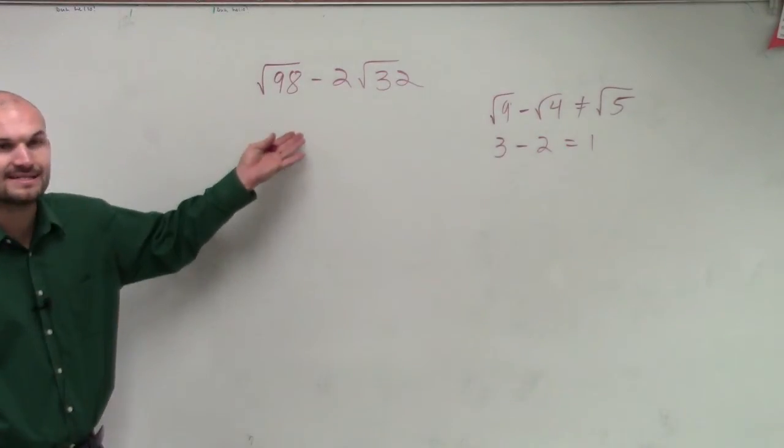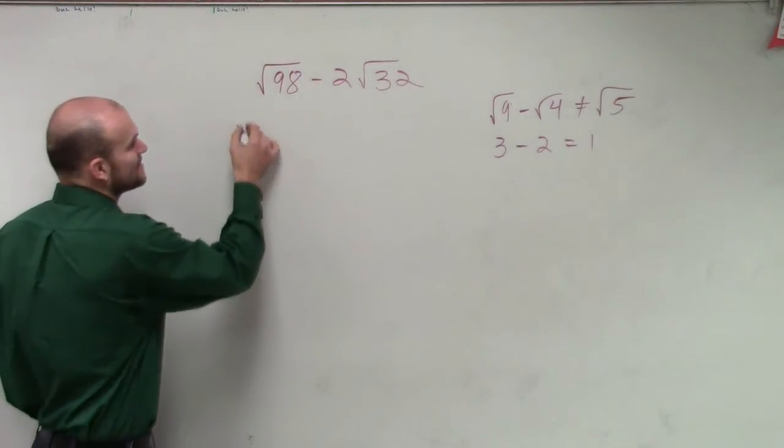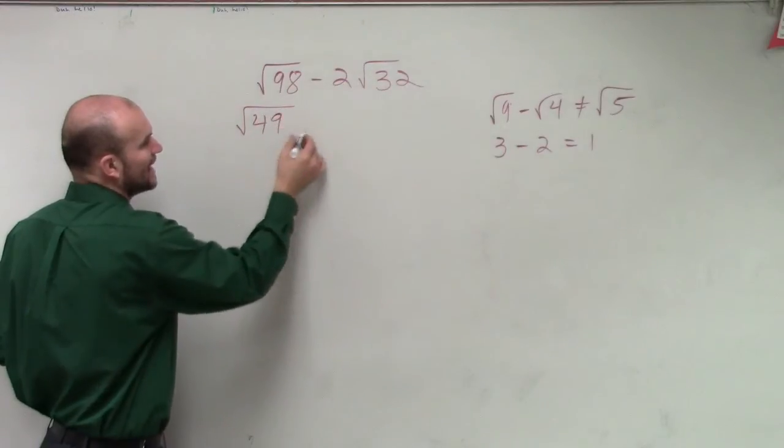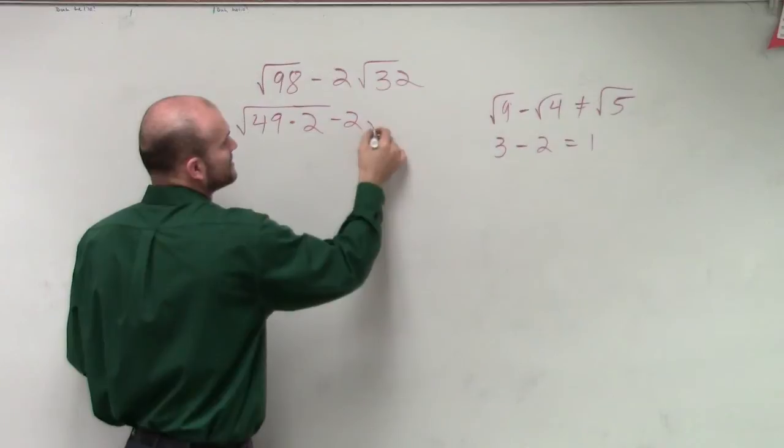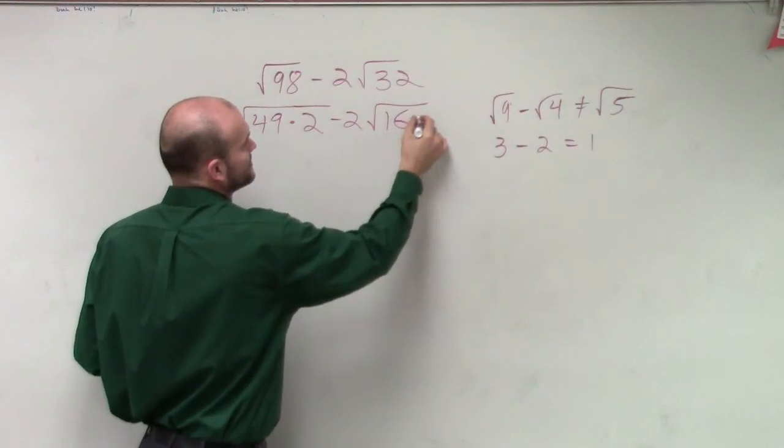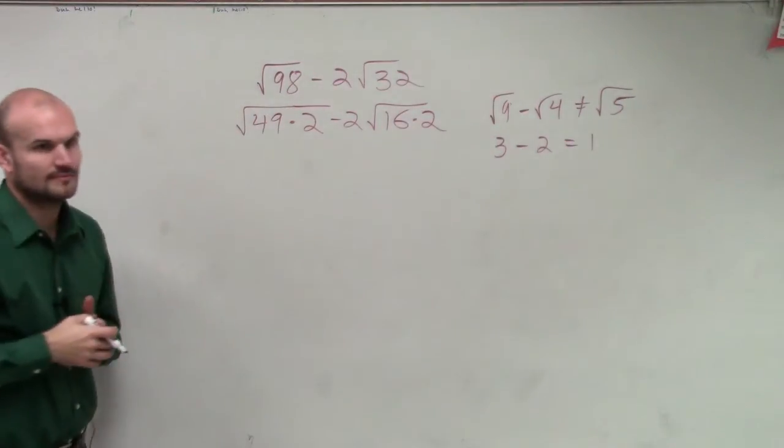Well, 98, I can rewrite that as the square root of 49 times 2 minus 2 times 16 times 2, right?